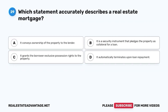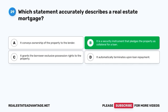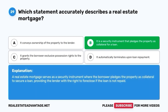Question 29. Which statement accurately describes a real estate mortgage? A. It conveys ownership of the property to the lender. B. It is a security instrument that pledges the property as collateral for a loan. C. It grants the borrower exclusive possession rights to the property. D. It automatically terminates upon loan repayment. The correct answer is B. A real estate mortgage serves as a security instrument where the borrower pledges the property as collateral to secure a loan, providing the lender with the right to foreclose if the loan is not repaid.